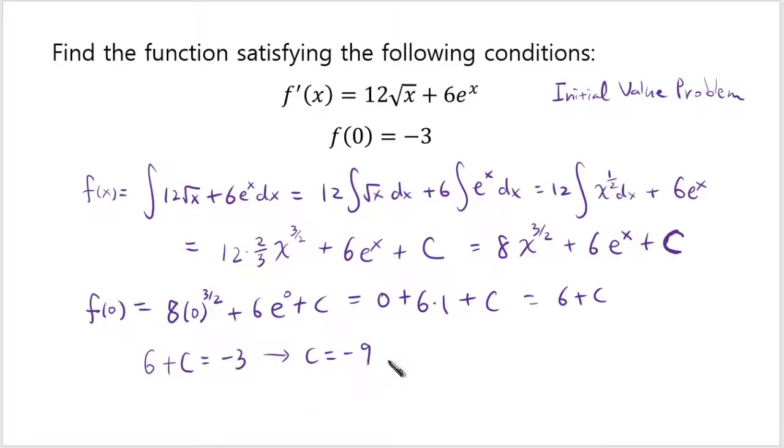Now you feel like you've achieved something. So many people abandon this problem at this point thinking that they've figured out the full solution. But you're not done yet because the answer is looking for the function satisfying this. So you have to write the function. And the function is 8 times x to 3 over 2 plus 6 times e to the x minus 9. That's the answer.